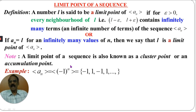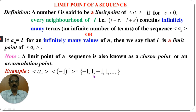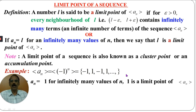Example: consider the sequence AN whose nth term is (-1)^N, which contains the elements -1, 1, -1, 1, and so on. Here, AN equals 1 for infinitely many values of N.